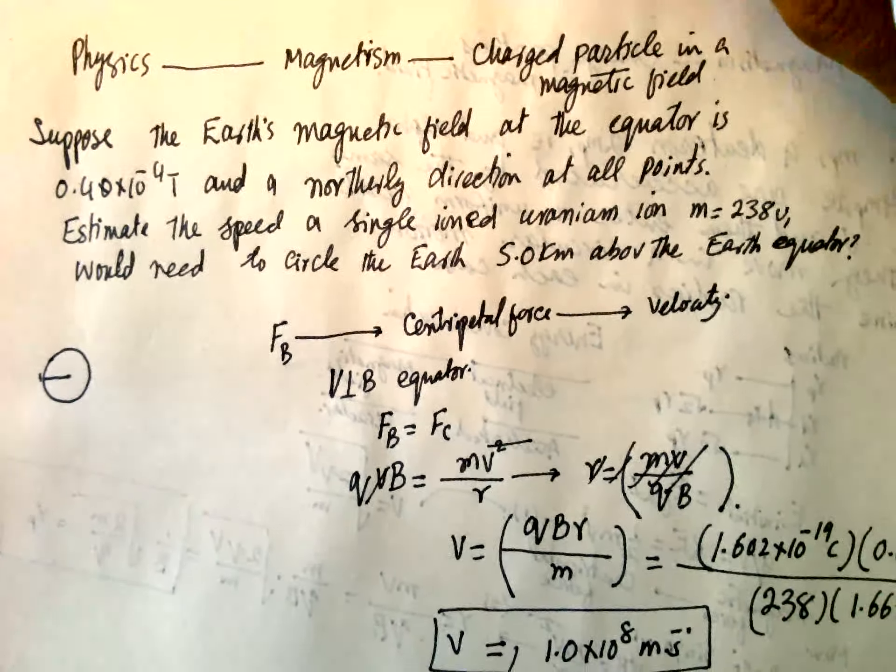So this is QVB is equal to MV square over R. This V, V cancel. So this R is equal to, R goes this one, so MV over QB.